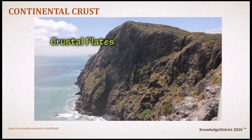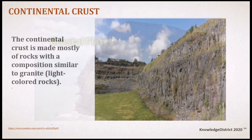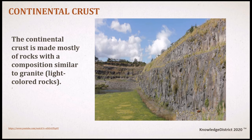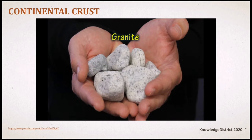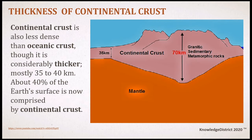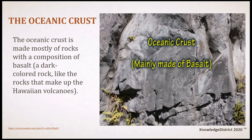The continental crust is broadly granitic in composition with a density of about 2.7 grams per cubic centimeter — somewhat lighter than the oceanic crust. It is made mostly of rocks with a composition similar to granite, the light-colored rocks. The continental crust is less dense than oceanic crust, though it is thicker. About 40% of the Earth's surface is comprised of continental crust. The oceanic crust is made mostly of basalt, a dark-colored rock like those that make up the Hawaiian volcanoes.